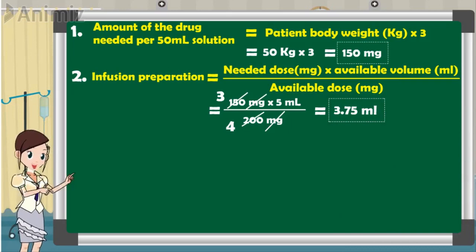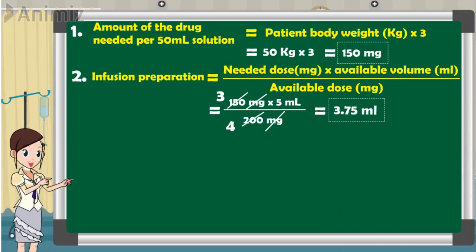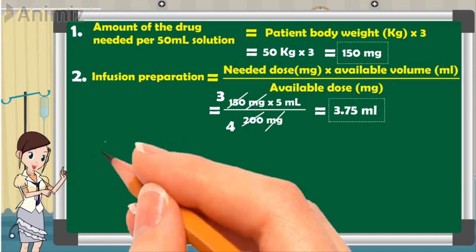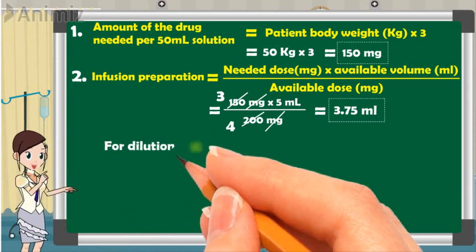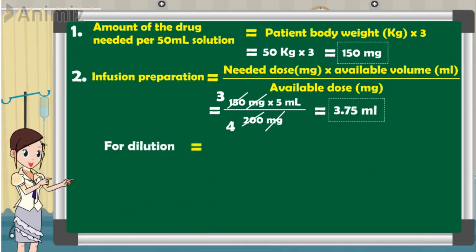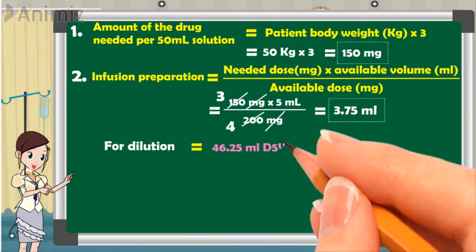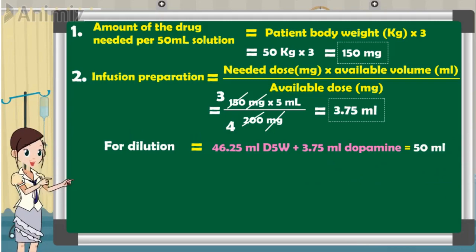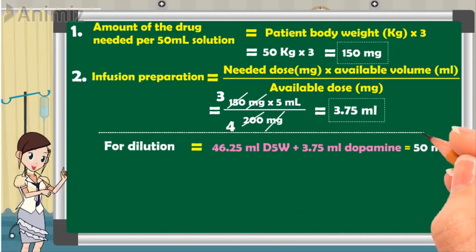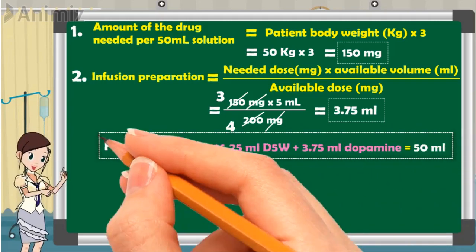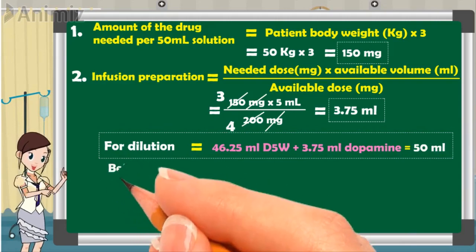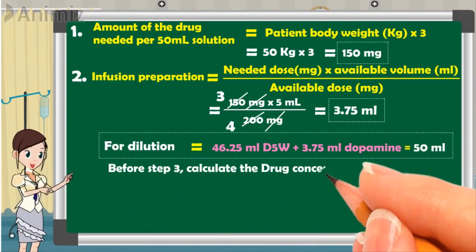Since dopamine should never be given as a direct dose and must always be diluted, for the dilution we add 46.25 ml of 5% dextrose with 3.75 ml of dopamine, giving a total of 50 milliliters as the infusion preparation for administering to the patient.